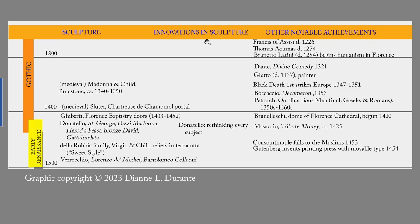From 1347 to 1351, the Black Death arrives in Europe by trade routes from Asia. There is no cure. The plague recurs five times by 1400 and a couple times after that. By some estimates a third of the population of Europe dies, so things come grinding to a halt. The early Renaissance in the visual arts picks up in the 1410s and lasts until 1500.